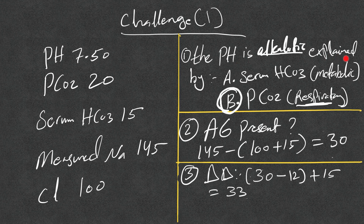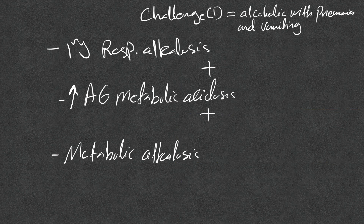So what does that mean? We have a primary respiratory alkalosis, there is an anion gap present — so there is high anion gap metabolic acidosis — and the delta-delta result of 33 is higher than the normal bicarb range of 22 to 26. This means there is also a metabolic alkalosis.